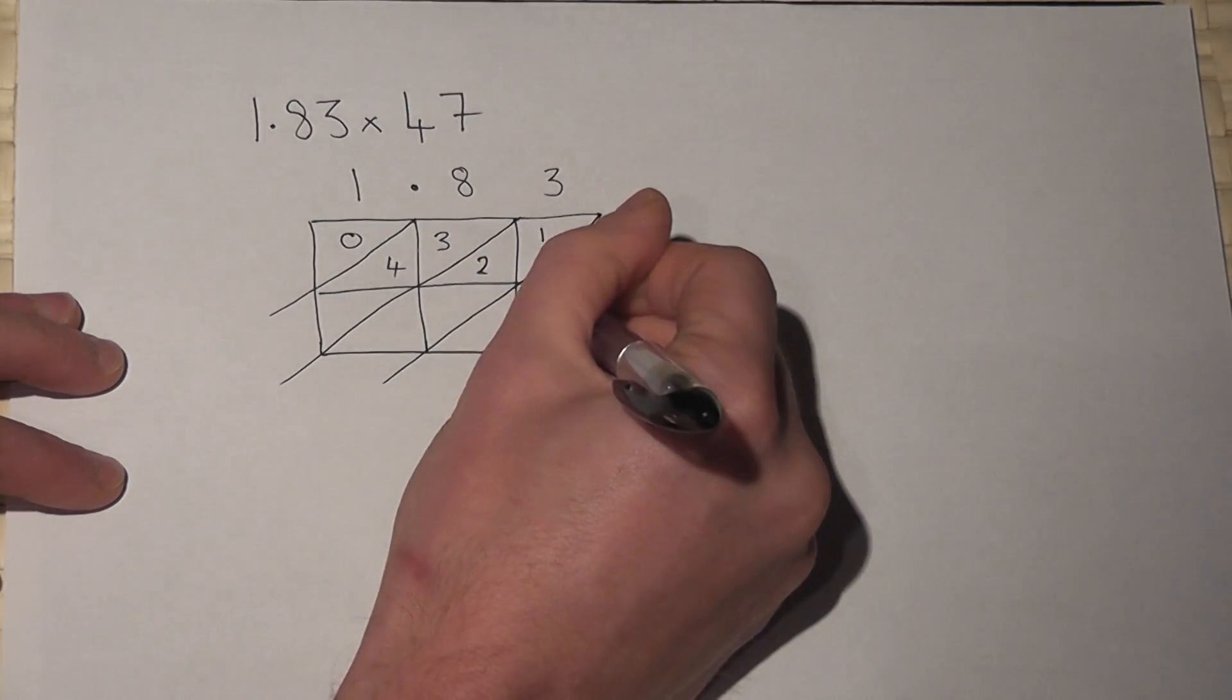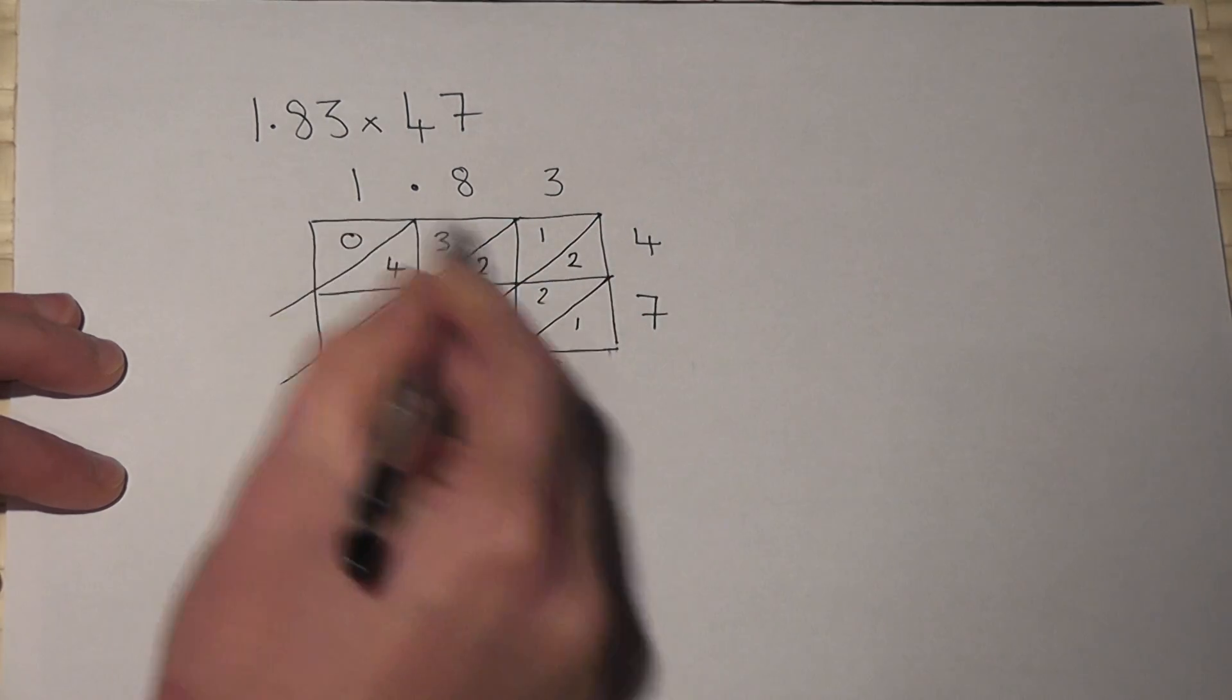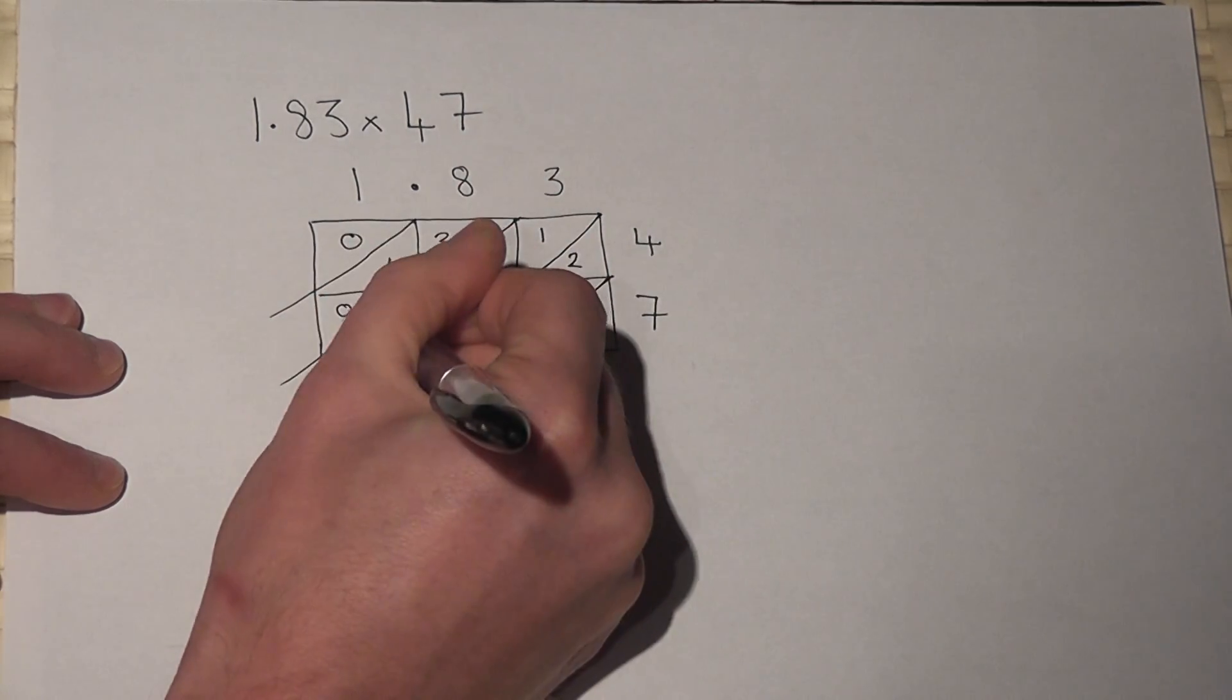3 times 7 is 21. 8 times 7 is 56. And 1 times 7 is 7.